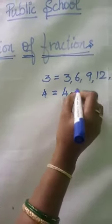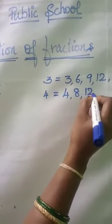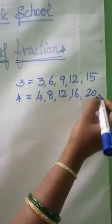The same way second fraction denominator 4, let us find the multiples of 4: 4, 8, 12, 16, 20 and so on.